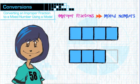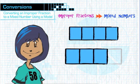First, we're going to use a model to show how to convert an improper fraction to a mixed number. Check out the two four-section fraction bars. All four sections are shaded blue in the first bar, and three of the four sections are shaded blue in the second bar.